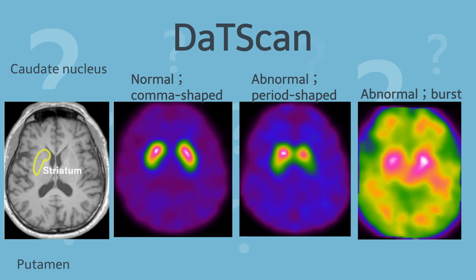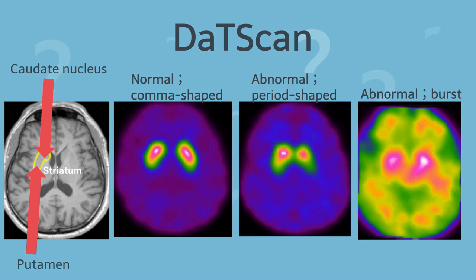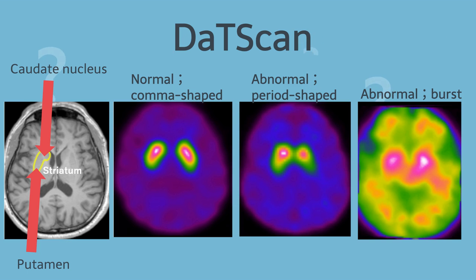When reading the DAT scan, focus on the pattern of striatal accumulation, which consists of the caudate nucleus and putamen, as well as the background accumulation. In normal patients, bilateral striatal accumulation appears symmetrically comma-shaped or crescent-shaped.